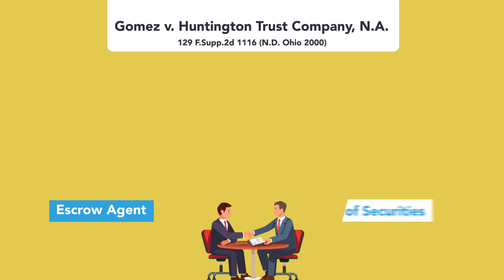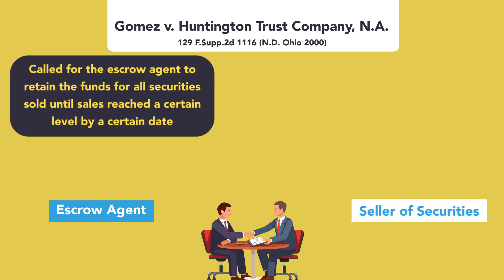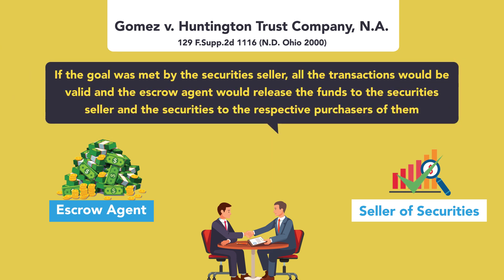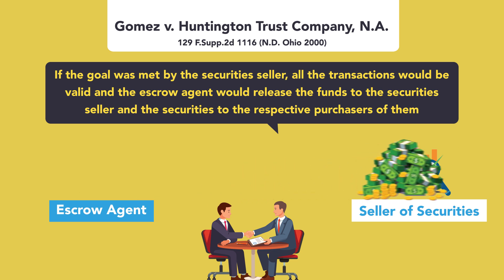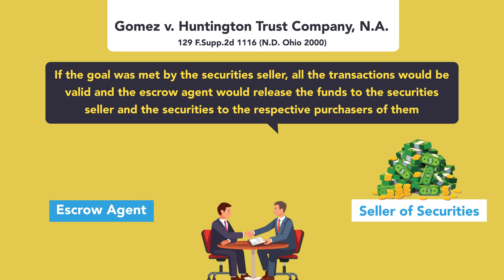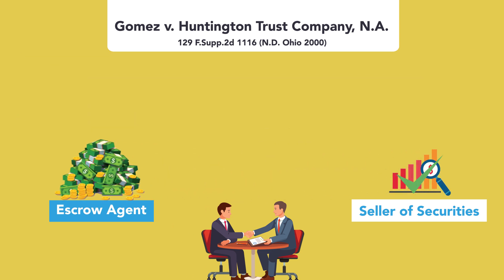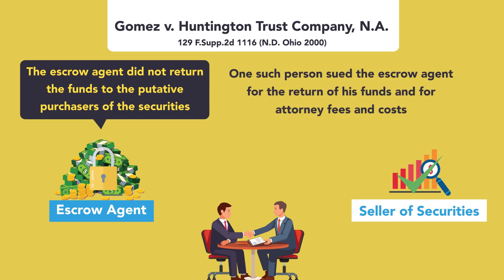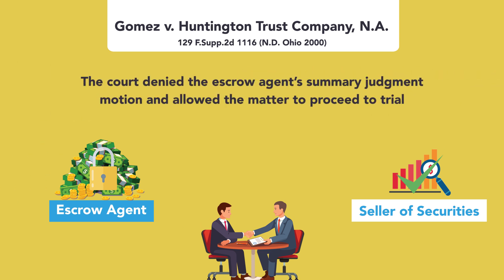the escrow agent entered an escrow agreement with a seller of securities, which called for the escrow agent to retain the funds for all securities sold until sales reached a certain level by a certain date. If the goal was met by the securities seller, all the transactions would be valid and the escrow agent would release the funds to the securities seller and the securities to the respective purchasers of them. When the magic date came and went, the escrow agent did not return the funds to the putative purchasers of the securities, after which one such person sued the escrow agent for the return of his funds and for attorney fees and costs. The court denied the escrow agent's summary judgment motion and allowed the matter to proceed to trial.